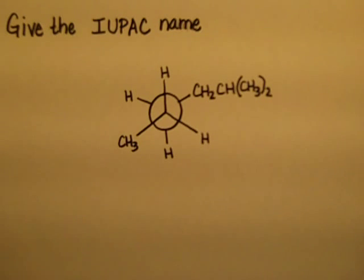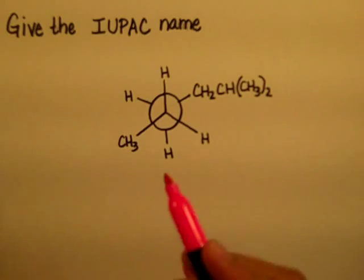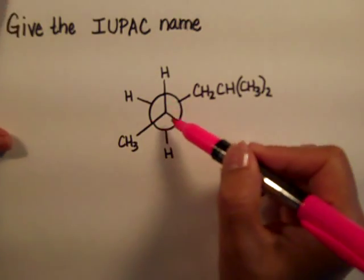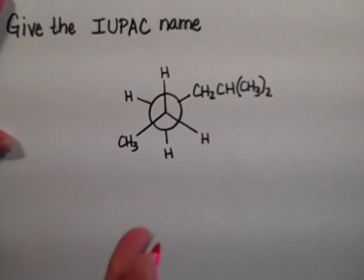We need to give the IUPAC name of this compound that they have kindly given to us in a Newman projection. The first thing I want to point out is that in a Newman projection, the circle represents two carbons. So we should actually start right there.